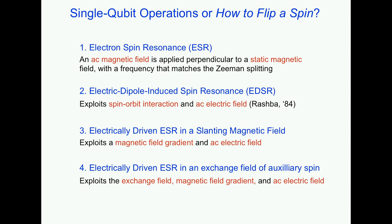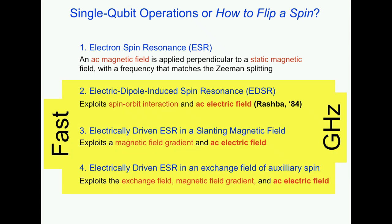One can do two-qubit and single-qubit operations. For single-qubit, there is a list of methods: standard ESR as in textbooks, but in solid state you have more knobs. You can shake the electron, and because of spin-orbit interaction, the spin will rotate when you shake the electron. This leads to so-called electric dipole-induced spin resonances, which are also very fast — much faster than conventional ESR techniques.